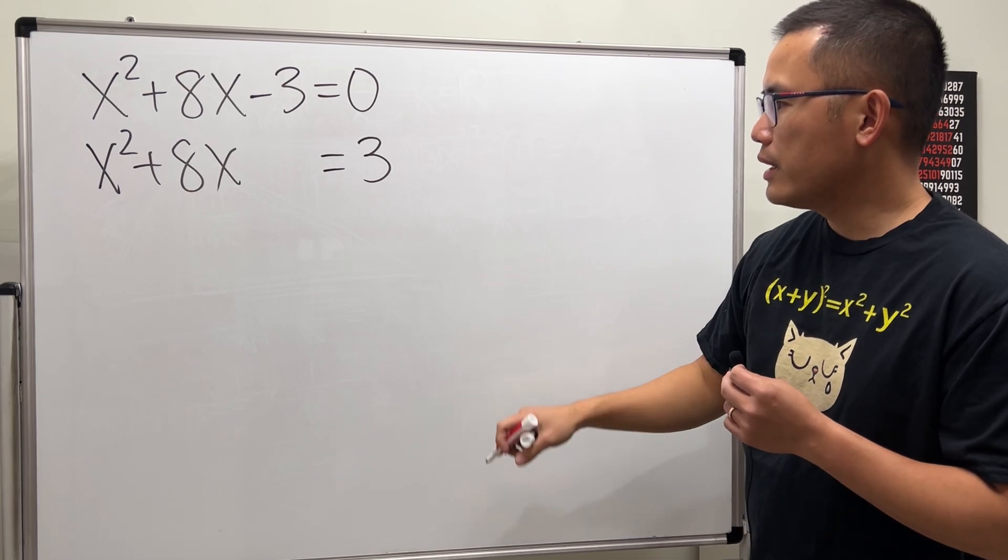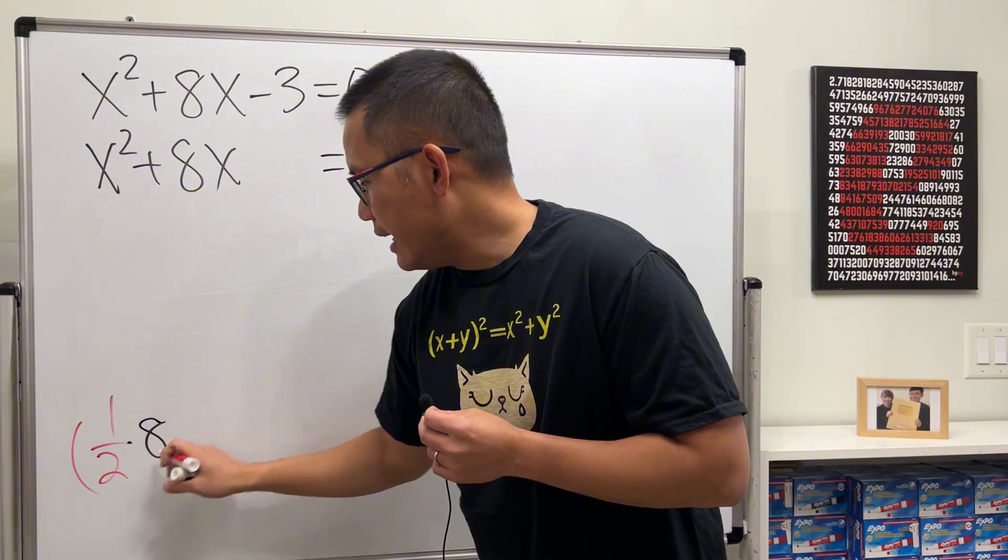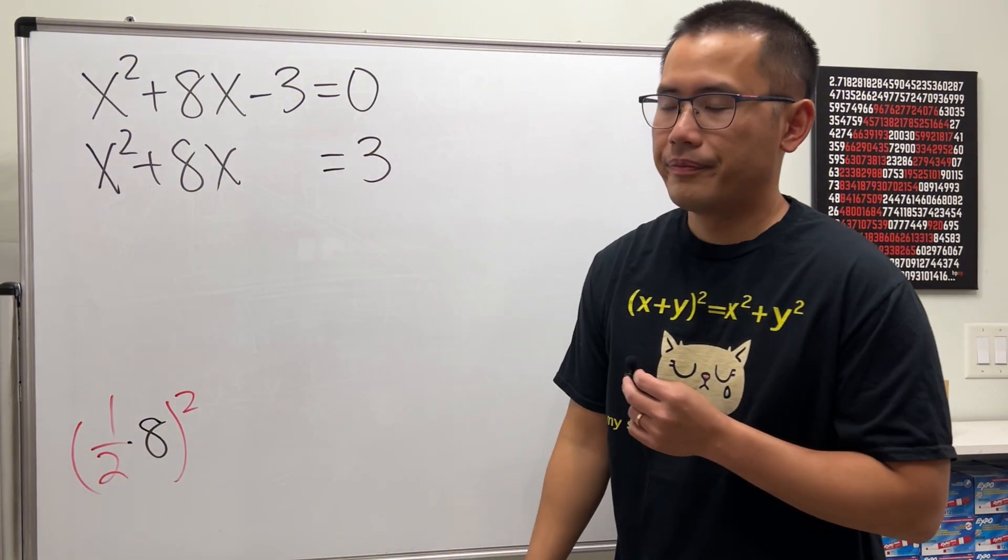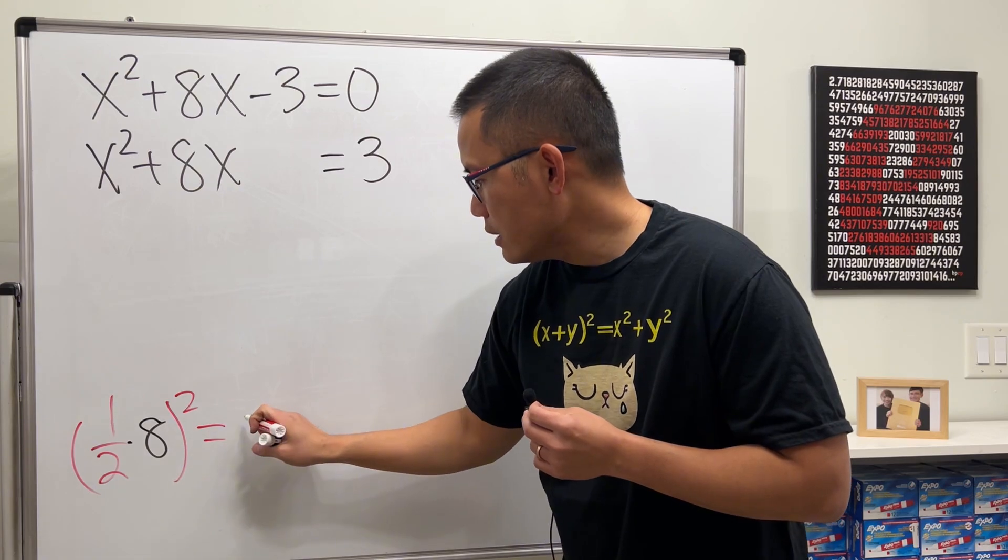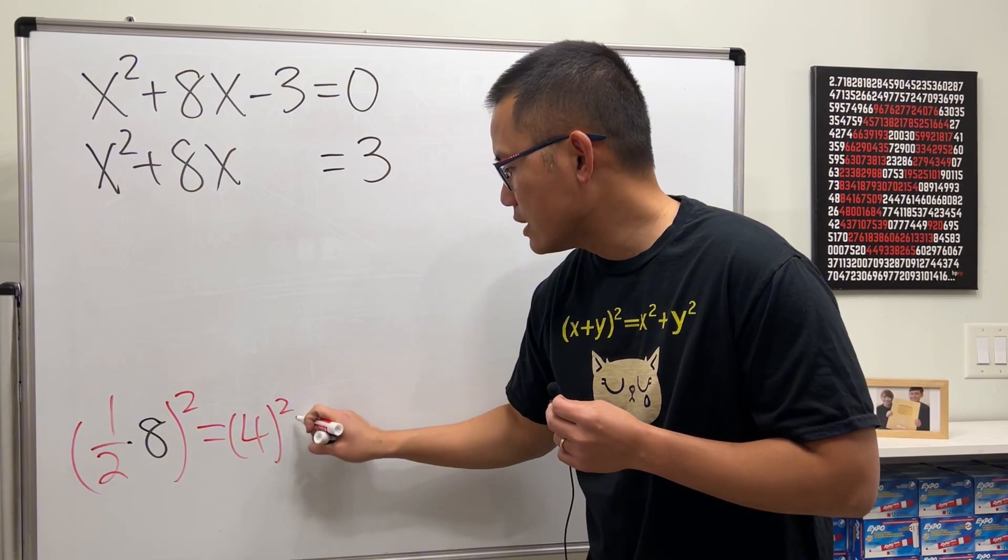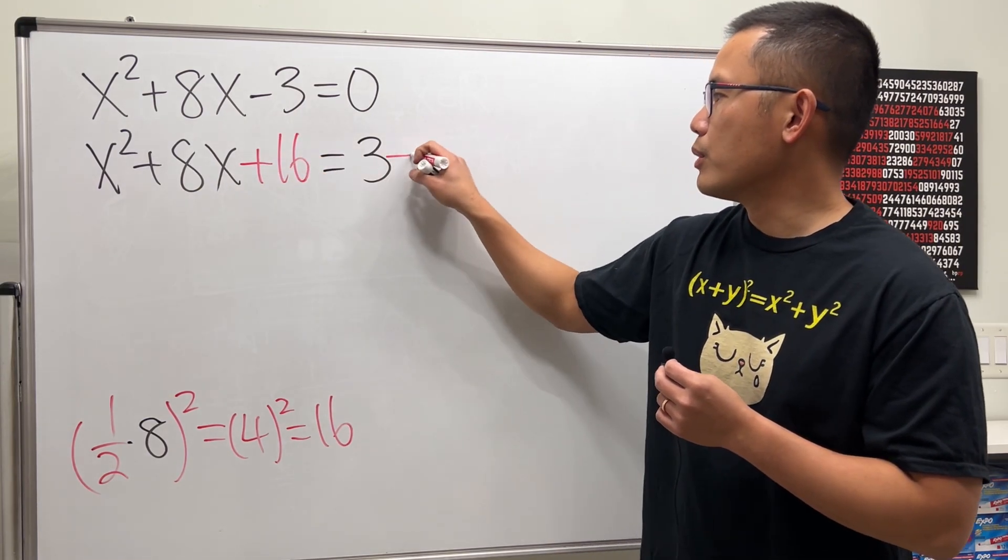Then we are going to take one-half of 8. Let me write it down right here, and then we have to square that. Now let's work this out: this is 4, and then we square that, we get 16. So we will have to add 16 to both sides.